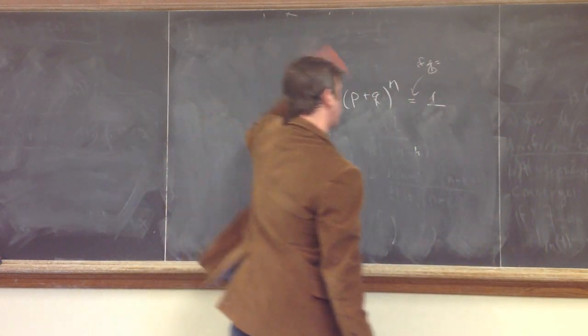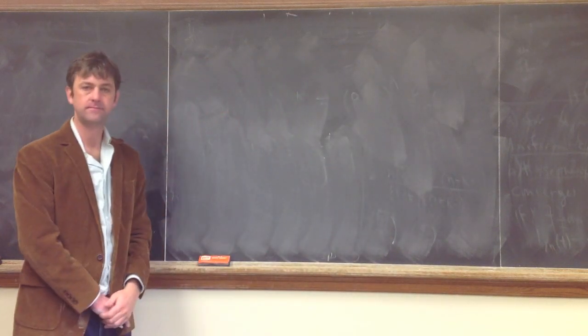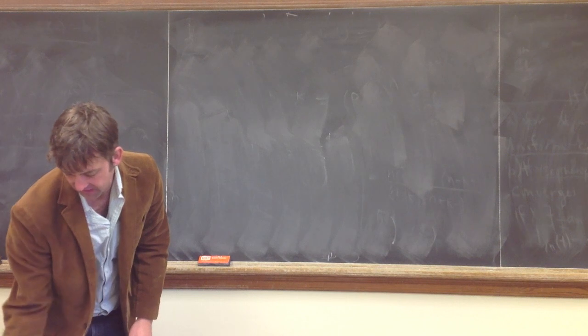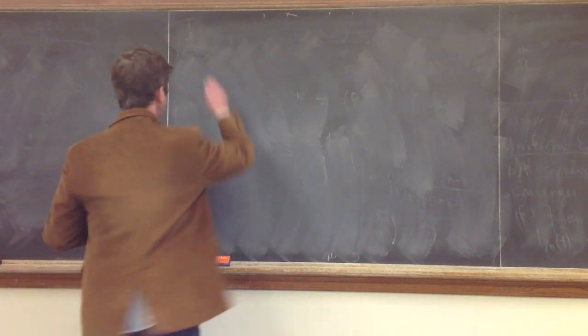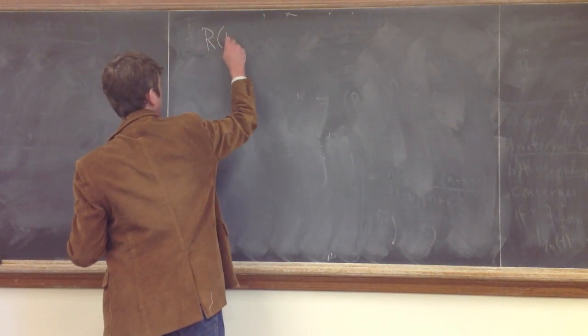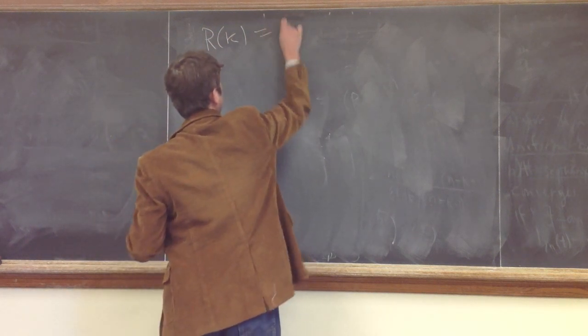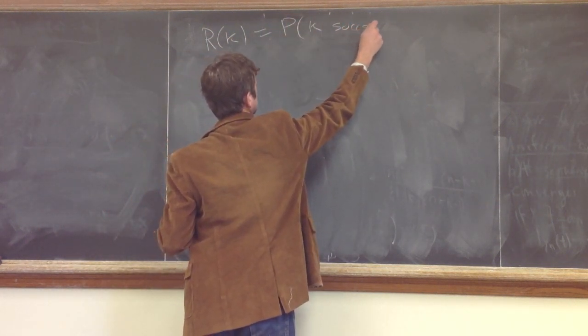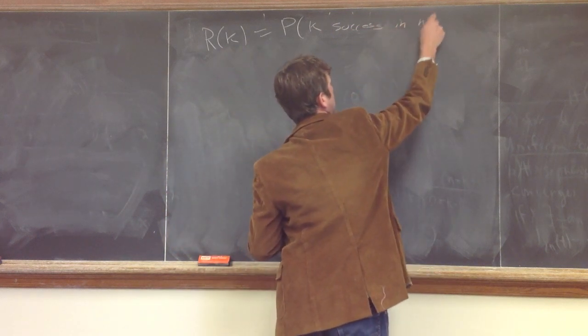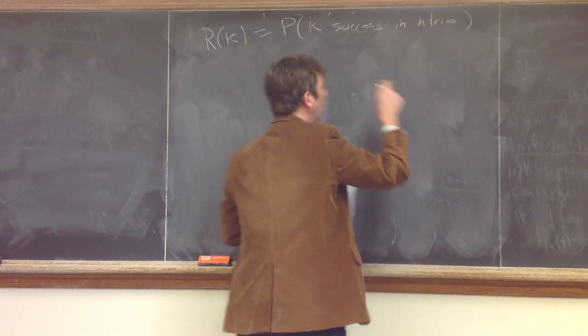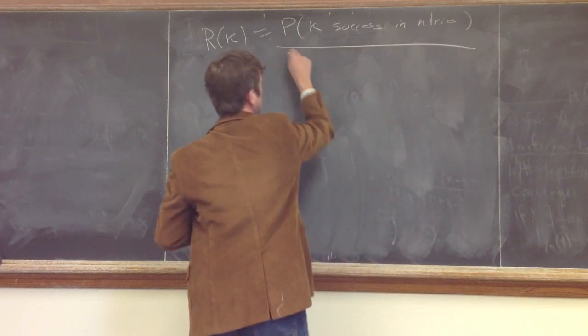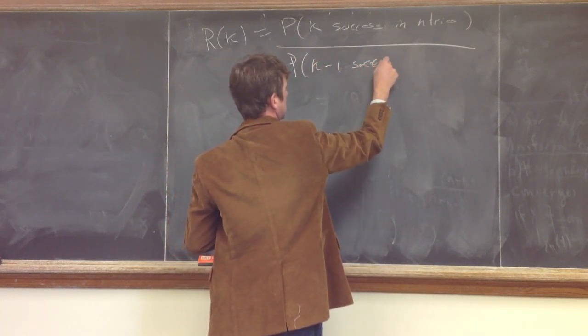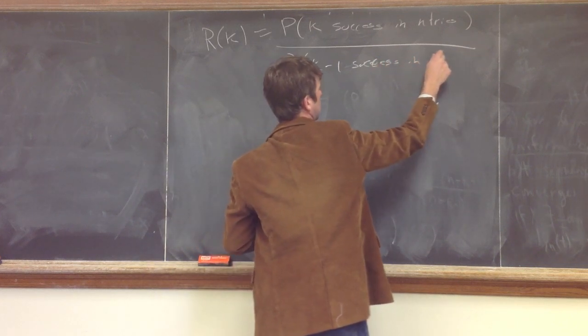All right, there's one last thing I want to say about the binomial distribution, and that is to calculate what's often called the odds ratio, which is in the book written R of k, which is the probability of k success in n tries over the probability of k minus 1 success in n tries.